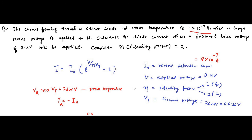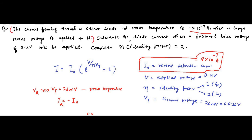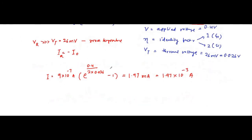The tricky part of this question was identifying the reverse saturation current. All other data was given directly: the forward bias voltage, the ideality factor, and the thermal voltage of 26 millivolt. But to remember the definition of reverse saturation current and understand that the first line of the question itself gives us its value — that is the key. The reverse current which flows through a diode when a large reverse bias voltage is applied at room temperature is 9 × 10⁻⁷ ampere. Remaining was just very simple: remember the equation, put the values, and get the answer.